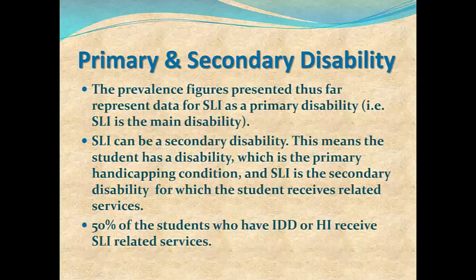Regarding primary and secondary disability: the prevalence figures presented represent data for SLI as a primary disability — meaning SLI is the main disability. SLI can also be a secondary disability, where the student has another primary handicapping condition and receives SLI-related services. 50% of students who have IDD (Intellectual and Developmental Delays) or HI (Hearing Impairment) receive SLI-related services.